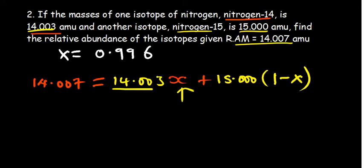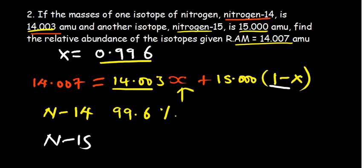Nitrogen-14's abundance by percentage is that value multiplied by 100, which is 99.6%. Then I can go for the other—nitrogen-15, which is 1 minus x. So 1 minus 0.996 gives 0.004, multiplied by 100, which is 0.4%.